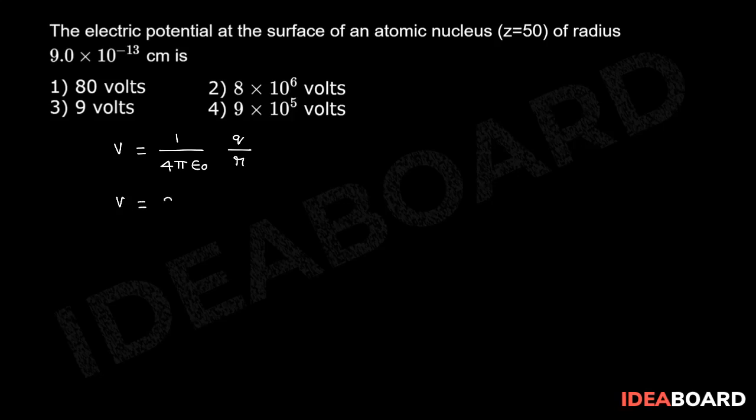So V is equal to 1 by 4 pi epsilon 0 is nothing but 9 into 10 power 9 into Q value, there are 50 electrons, 50 into 1.6 into charge of the electron, 10 power minus 19 by R value, 9.0 into 10 power minus 13.